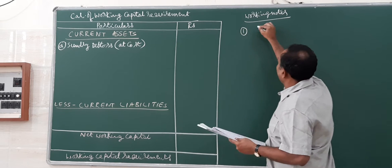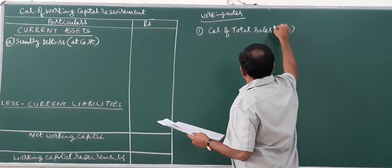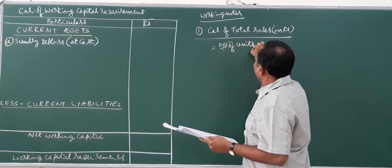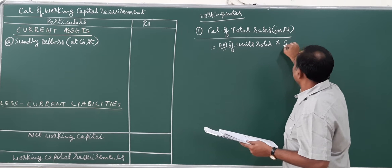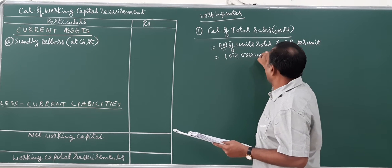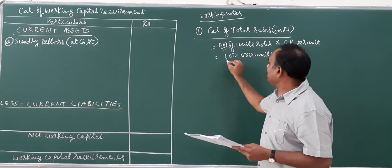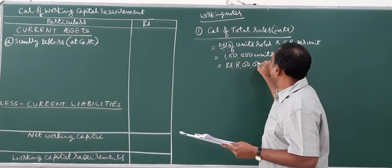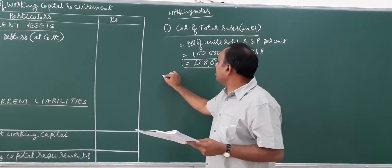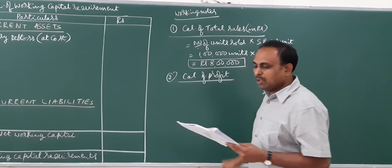Working Note 1: Calculation of total sales in rupees. Number of units sold multiplied by selling price per unit — both pieces of information are available. Number of units sold is one lakh units, and selling price per unit is eight rupees. Multiplying gives total sales of rupees 8 lakhs.